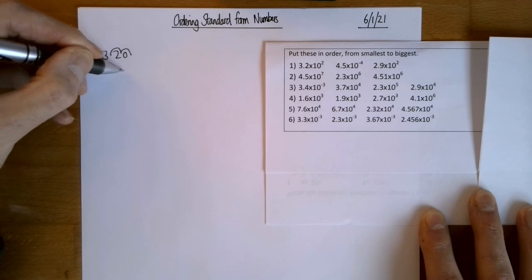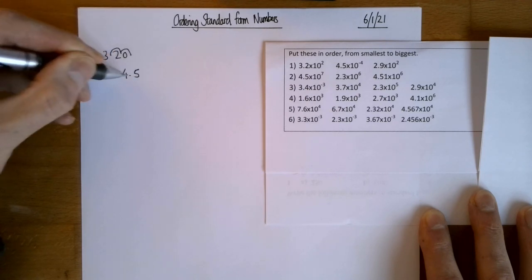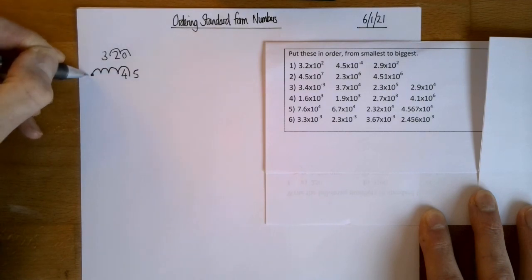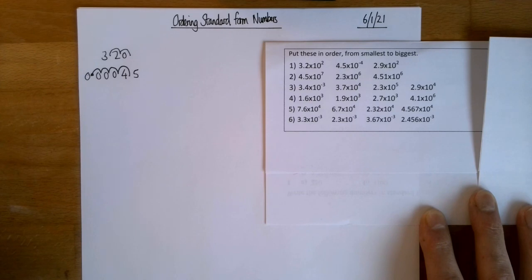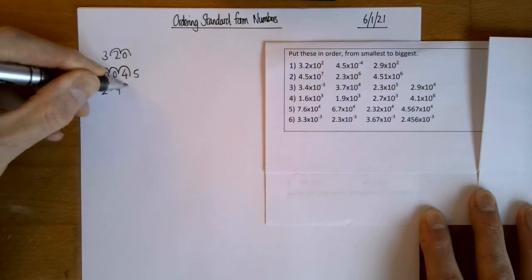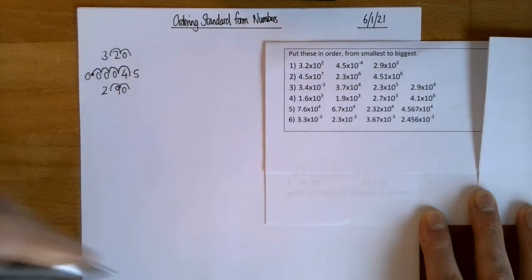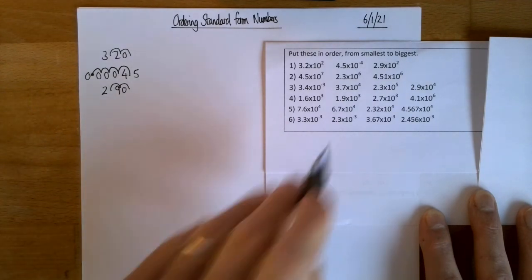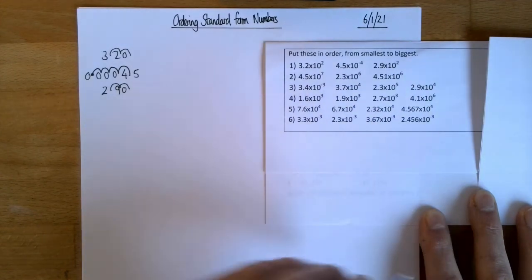And this is a tiny number, 4.5 times 10 to the power of minus 4. So that means I'm jumping the other way. 1, 2, 3, 4. That's 0.00045. And this 2.9 times 10 to the 2, 290. So I could do that and then put them in order. That's nice and easy, isn't it? I'm sort of hoping we don't need to do that, though. I'm sort of hoping we could put them in order just by looking at the numbers as they stand.